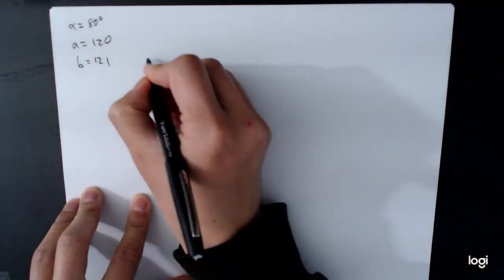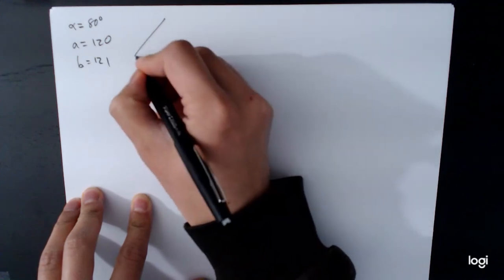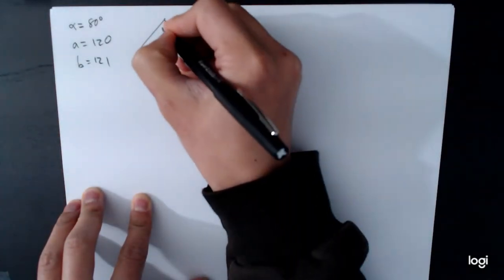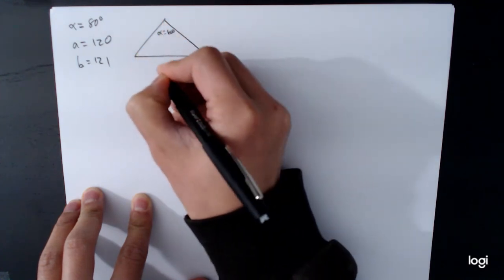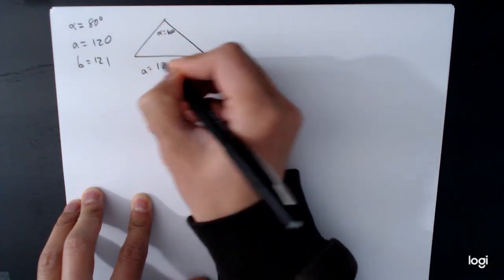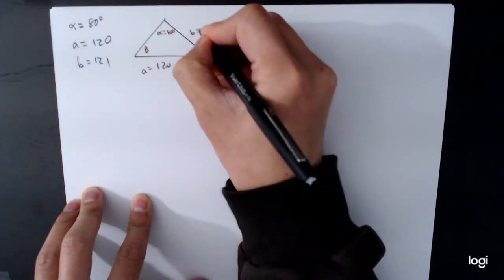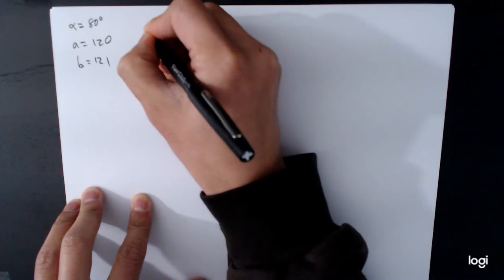And so from this information, we have to actually draw our own triangle and it doesn't matter how you orient it. I just try to keep things simple. So we'll make this one alpha is 80 degrees. So A is 120 down here. Just have to make a decision. Put beta over here. B equals 121, gamma, C.